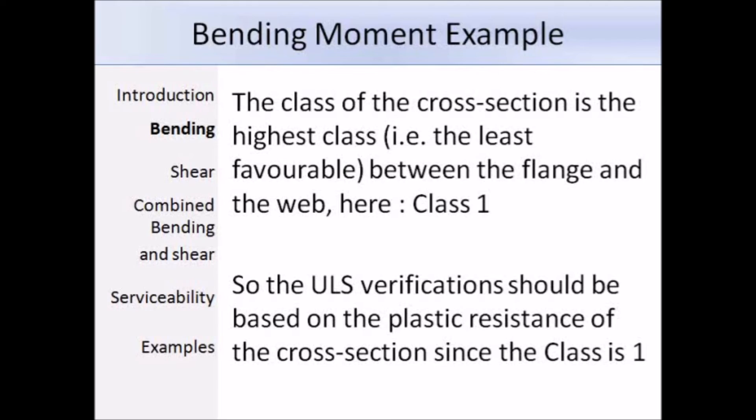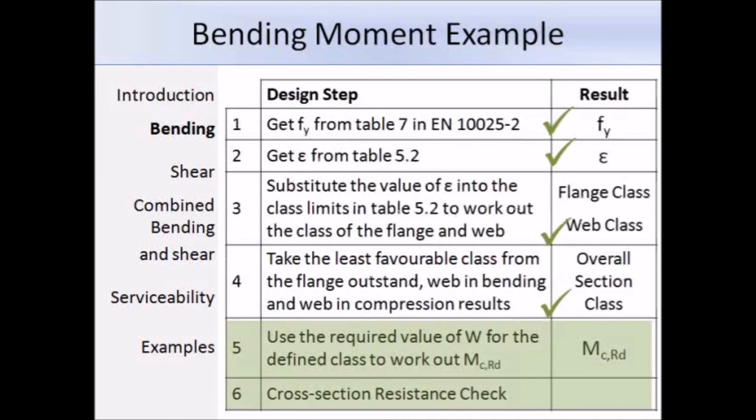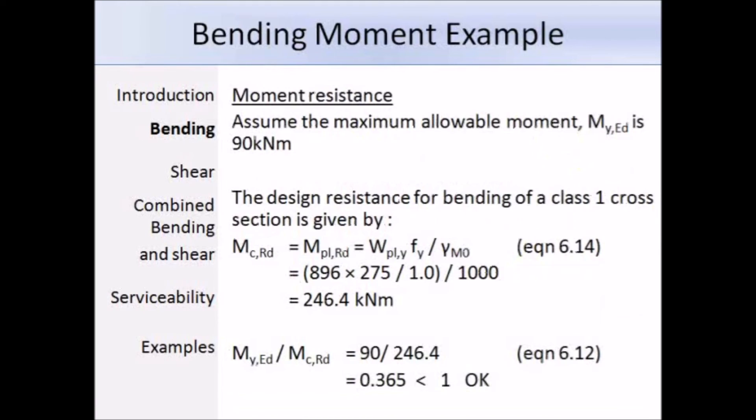These final two steps involve working out the design bending resistance and comparing that to the design moment to make sure that the resistance is adequate. For this question, let's assume that the maximum allowable design moment MED is 90 kNm. We have the subscript Y because it's about the y-axis, which in the eurocodes is the major axis. Since the section is class 1, we know that the expression to work out the design bending resistance is equal to the plastic design resistance. That is equal to the plastic section modulus Wpl,y times the yield strength divided by partial factor gamma M0, which is 1.